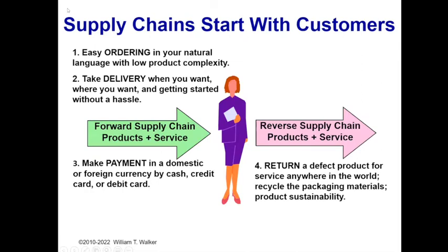This is a slide I presented over 10 years ago, and I haven't changed it because it's still as relevant today as it was back then. The idea is that your customer basically interacts with the supply chain with four types of transactions. First, the customer wants to be able to order the product, and ideally they would like to order it in their natural language and with low product complexity. Secondly, the customer wants to take delivery where they want it, when they want it — they don't want to hassle with the delivery.